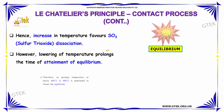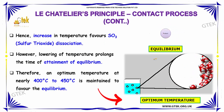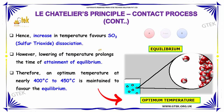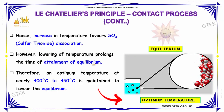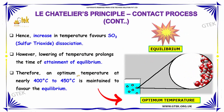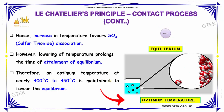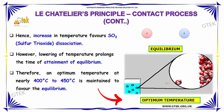An increase in pressure and temperature favors sulfur trioxide dissociation. However, lowering the temperature prolongs the time of attainment of equilibrium. Therefore, an optimum temperature of nearly 400°C to 450°C is maintained to favor the equilibrium.